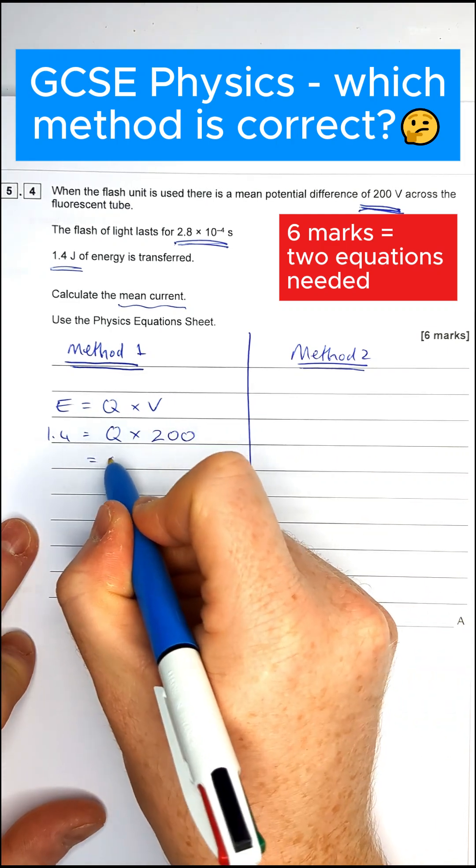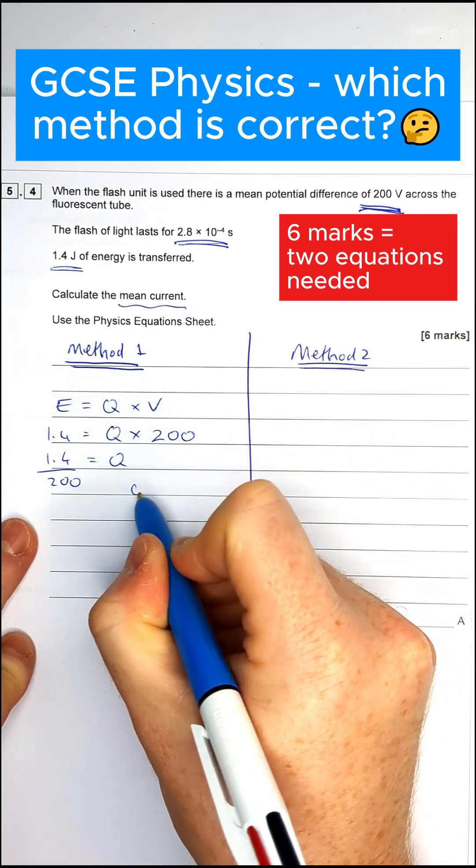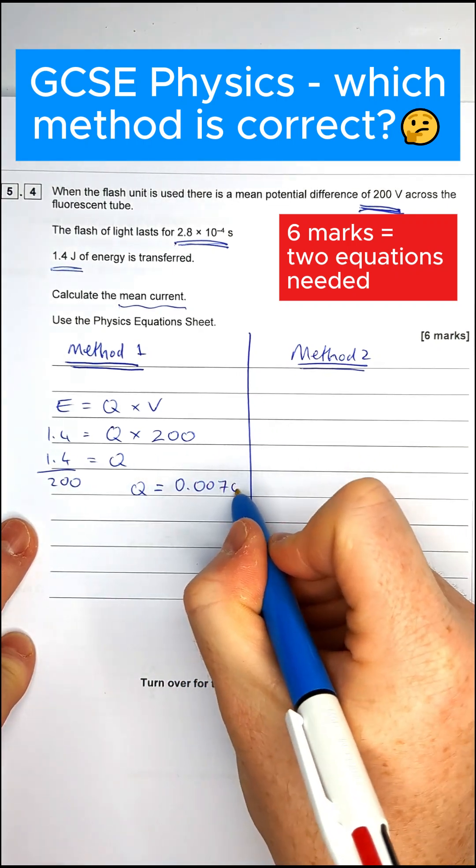So all I've got to do to find the charge is divide the left side by 200, which gives us a charge of a very, very small amount, 0.0070 coulombs.